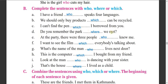D - Do you remember the park where we met? This is a place, so with place we use 'where'. E - At the party, there were three people who knew me - after 'people' we use 'who'. F - I want to see the film which everybody is talking about - film is a thing, so we use 'which'. G - What's the name of the man who lives next door?